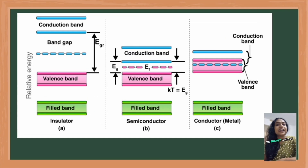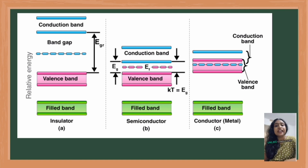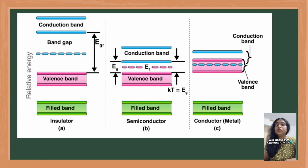In a semiconductor, the energy levels of electrons are divided into two bands: the valence band and the conduction band. The energy gap between these two bands, called the band gap, determines the electrical properties of the material. Unlike conductors where electrons can freely move in the conduction band, or insulators where the band gap is too large for electrons to jump from the valence band to the conduction band, semiconductors have a moderate band gap that allows some electrons to move to the conduction band under certain conditions, thus enabling conductivity.